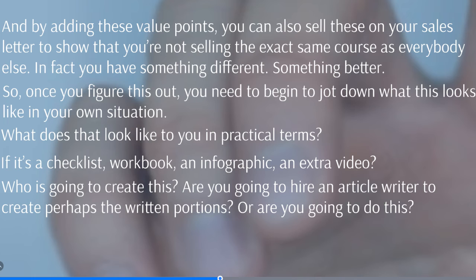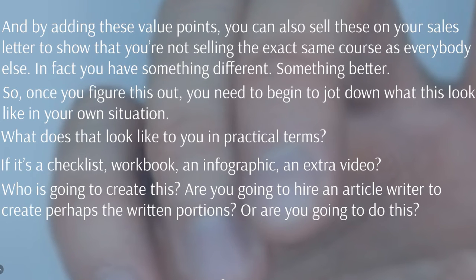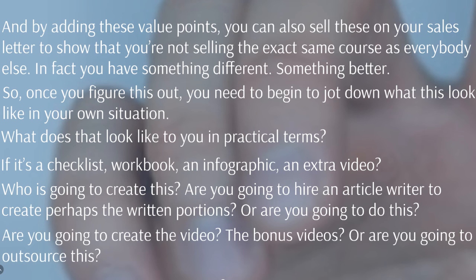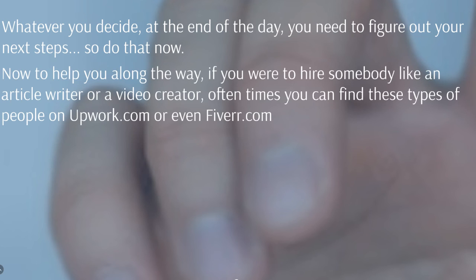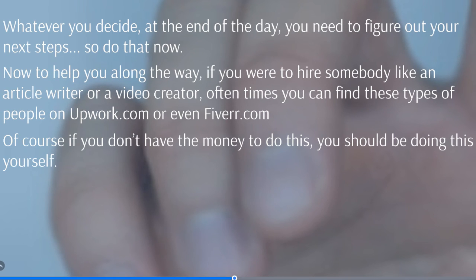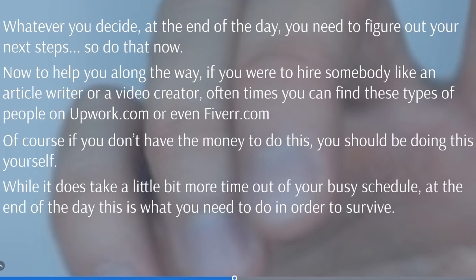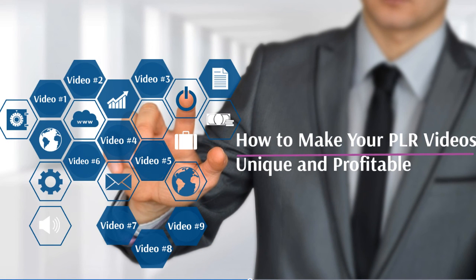Now you need to think about who is going to create this — are you going to create it or is somebody else? Are you going to hire an article writer for the written portions, or create the bonus videos yourself, or outsource this? Whatever you decide, you need to figure out your next steps. If you hire somebody like an article creator or video creator, you can often find these people on upwork.com or fiverr.com. If you don't have money to do this, you should be doing it yourself. While it takes time, this is what you need to do to survive and make sure that your private label rights product lasts for many years to come.